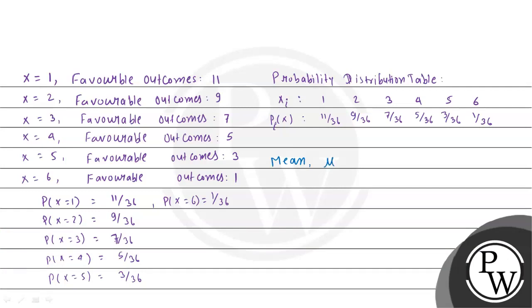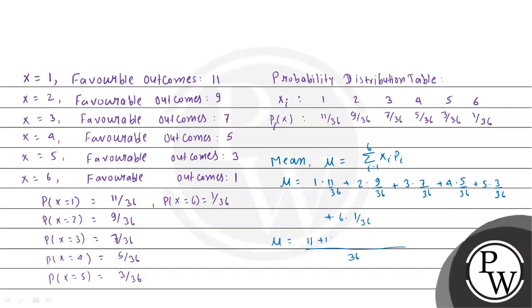Mean is given by mu equal to summation of Xi · Pi, where i is varying from 1 to 6. So mu = 1×(11/36) + 2×(9/36) + 3×(7/36) + 4×(5/36) + 5×(3/36) + 6×(1/36). Taking 36 as the common denominator, the numerator becomes 11 + 18 + 21 + 20 + 15 + 6 = 91. So mu = 91/36.